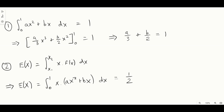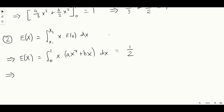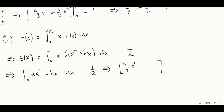We can solve the integral to get another equation involving a and b. First, expanding the bracket gives us ax³ + bx², and integrating gives (a/4)x⁴ + (b/3)x³, evaluated between 1 and 0, equals 1/2. That gives us a/4 + b/3 = 1/2. So that's our second equation.